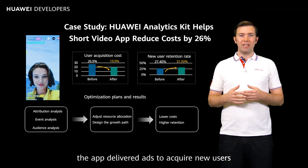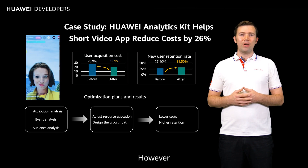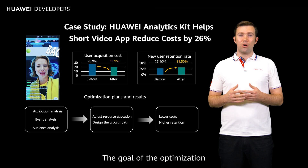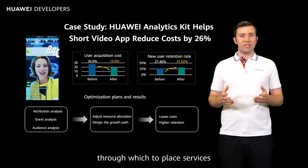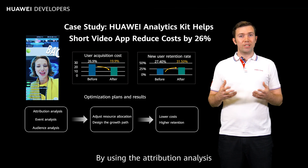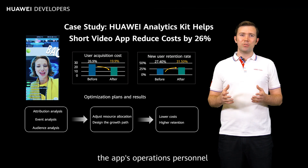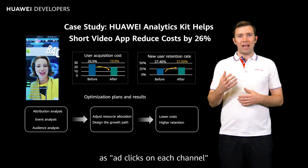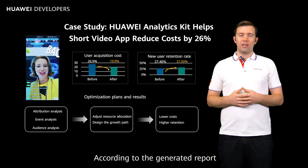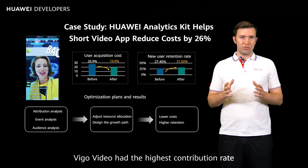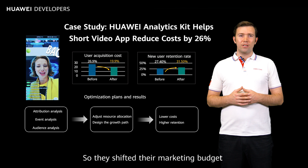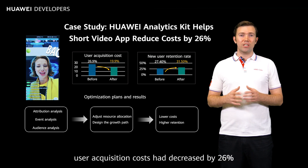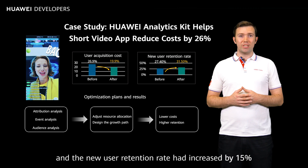In this case, the app delivered ads to acquire new users in various ways. However, the contribution rate from each channel could not be accurately calculated and the user churn rate was high. The goal of the optimization was to select better channels to place services and boost the retention rate for new users. By using the attribution analysis model of Huawei Analytics Kit, the app's operations personnel defined the target conversion event as new download and use, and the to-be-attributed event as ad clicks on each channel. According to the generated report, Vigo Video had the highest contribution rate whereas Weibo had the lowest, so they shifted their marketing budget from Weibo to Vigo Video. Within three months of optimization, user acquisition costs had decreased by 26% and the new user retention rate had increased by 15%.